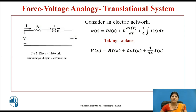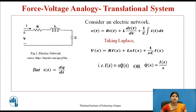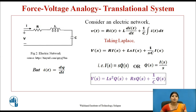Now we compare F(s) and V(s), but we cannot compare them directly because they are not in the same form. So we use current as the rate of flow of charge: i(t) = dq/dt. Taking Laplace gives I(s) = s·Q(s), or Q(s) = I(s)/s. Replacing this term in the above equation, the final equation for V(s) becomes: V(s) = Ls²Q(s) + Rs·Q(s) + (1/C)·Q(s). Now F(s) and V(s) are in the same form.